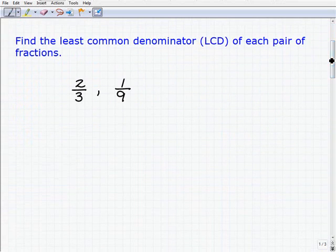We have 2/3 and 1/9. So if I want to find the LCD, I'm just focusing on the denominators, here it's 3 and 9. We have to find the LCM of 3 and 9, and when we do that, we're actually finding the LCD.